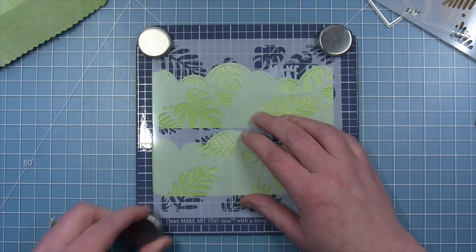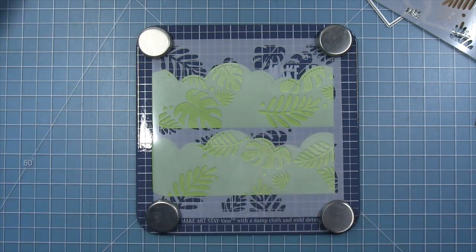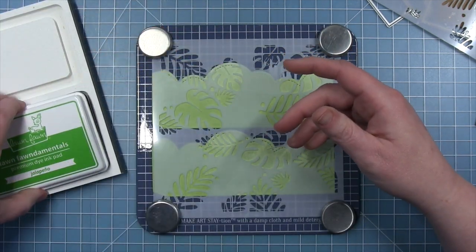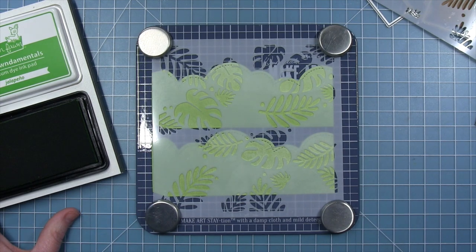I've pulled out my tropical leaves background stencils, and I'm starting with the first one. I've made sure that the Lawn Fawn logo is at the bottom so I can line up the second one easy.